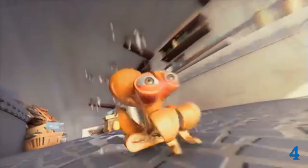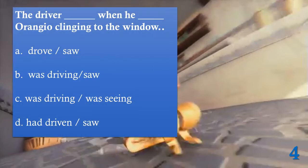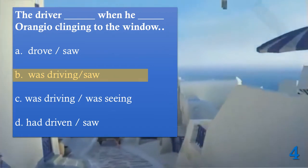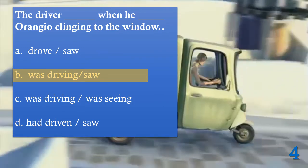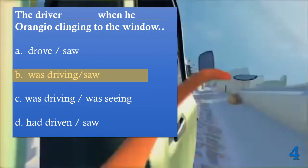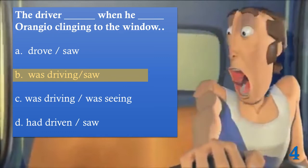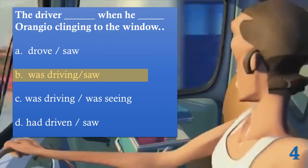What happened after this? The driver was driving when he saw Orangu clinging to the window. It's an interrupted action — the driver was driving (past continuous) and when he saw Orangu (past simple), that interrupted it.